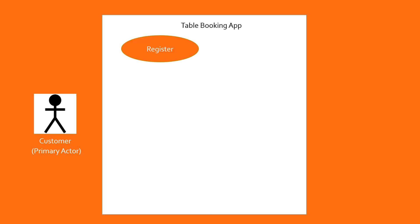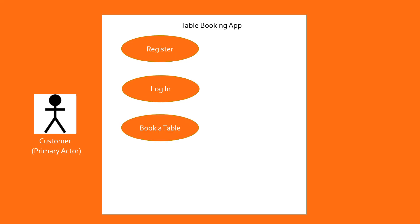So now let's build the use case diagram for this case study. First, we start with a big rectangle to indicate the solution — in this case the table booking app, so we name it 'Table Booking App.' Second, we add the actor: the main focus is the customer who will use the app to book tables. Since the customer is the primary actor who triggers the use cases, they are placed on the left-hand side. Then we add the oval-shaped use case icons representing the requested features: register, login, and book a table. Finally, we draw associations — straight lines indicating the relationship between the actor and the use cases. This comprises the basic feature set of the app.